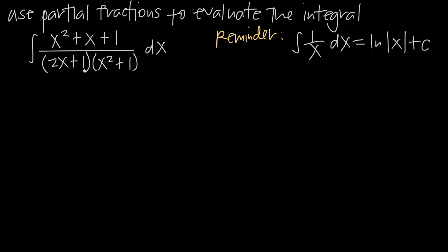With partial fractions, what we want to do is come up with a partial fractions decomposition — simplify this fraction into its partial fractions decomposition so that we can integrate that decomposition instead of this fraction, which we can't integrate as is. We need to recognize that we have distinct factors: a factor of 2x plus 1 and a factor of x squared plus 1, so they are distinct.